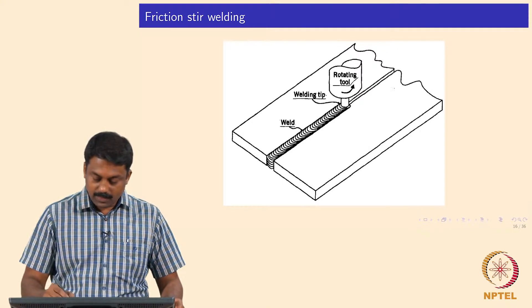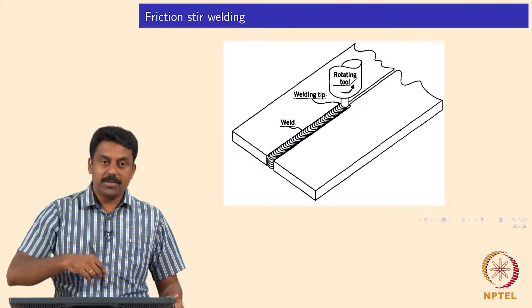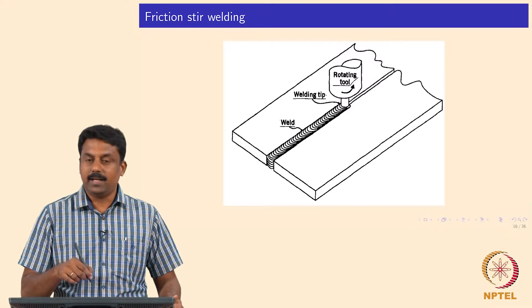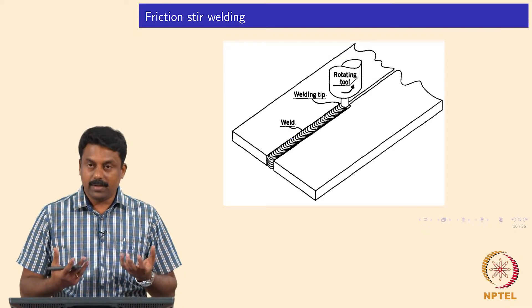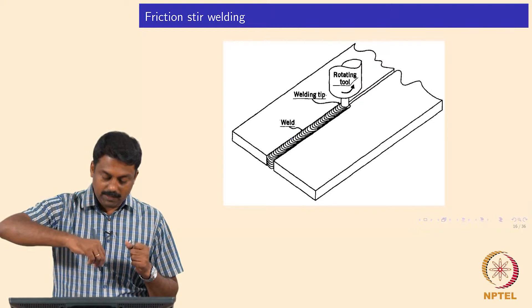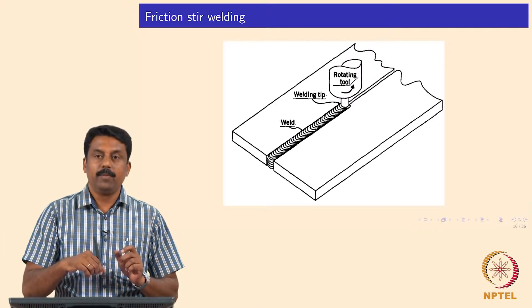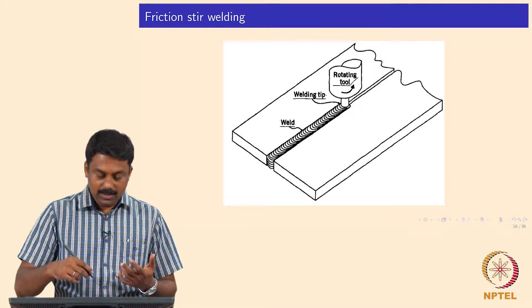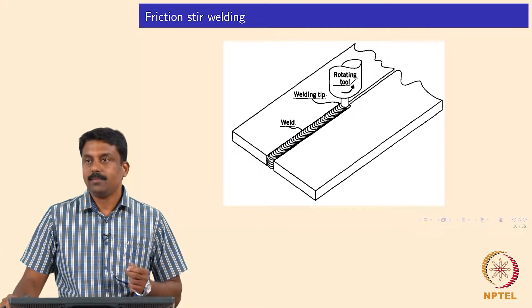In friction stir welding, you have a rotating tool at the interface. This tool is plunged into the interface initially and then rotated. During this rotation, friction between the tool and the interface generates heat. As temperature increases, the interface becomes softer. The rotating motion of the tool deforms material from one interface side to another, causing the interfaces to coalesce and form a joint.